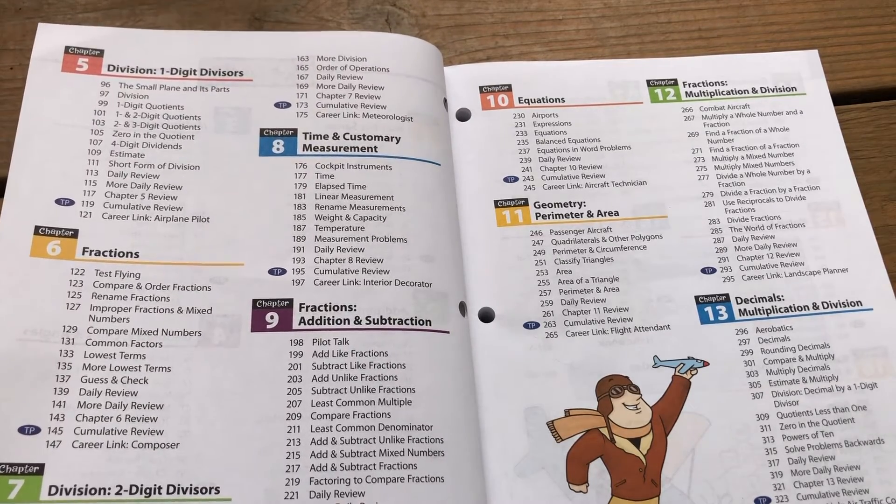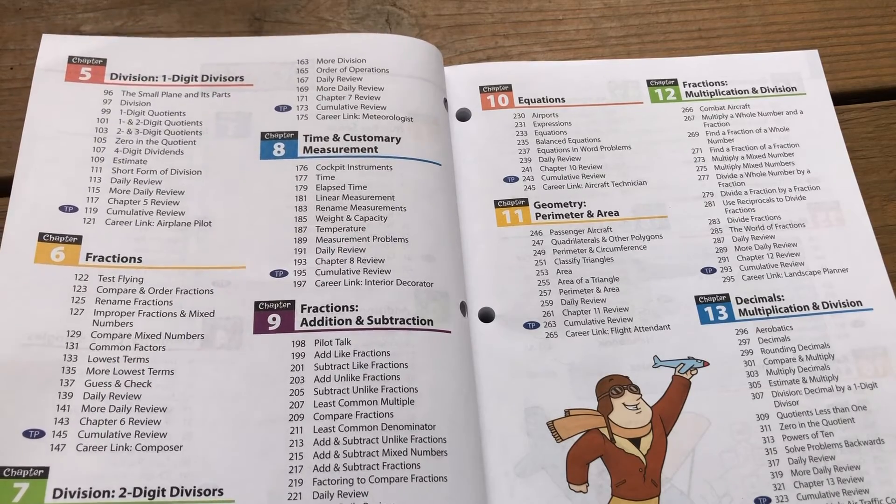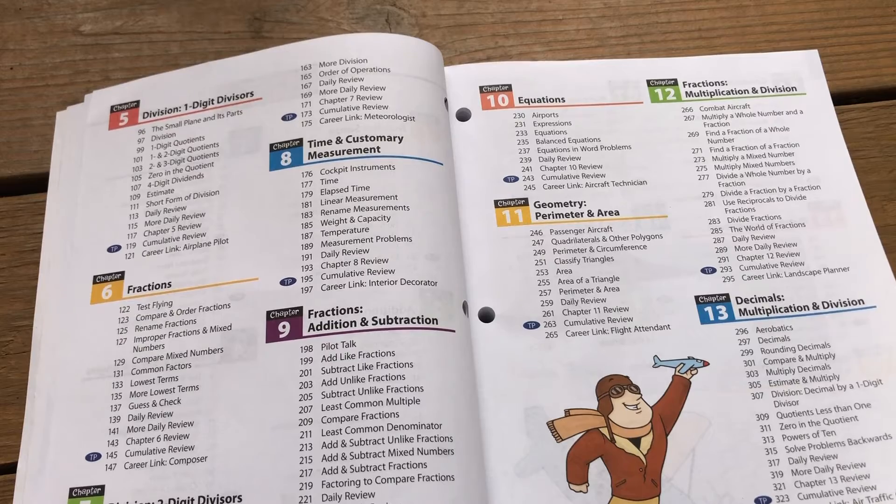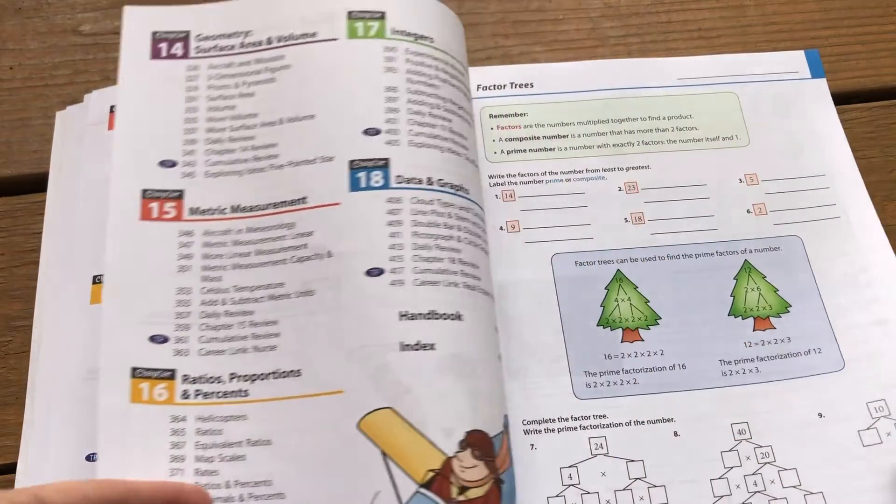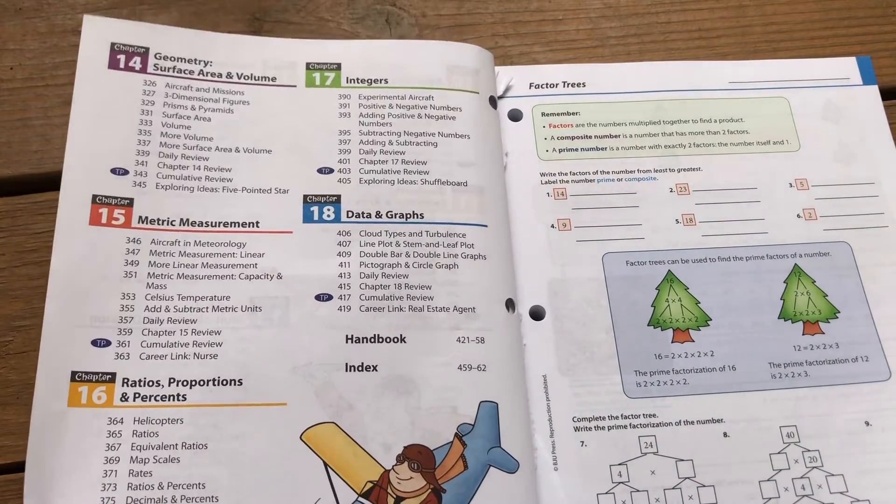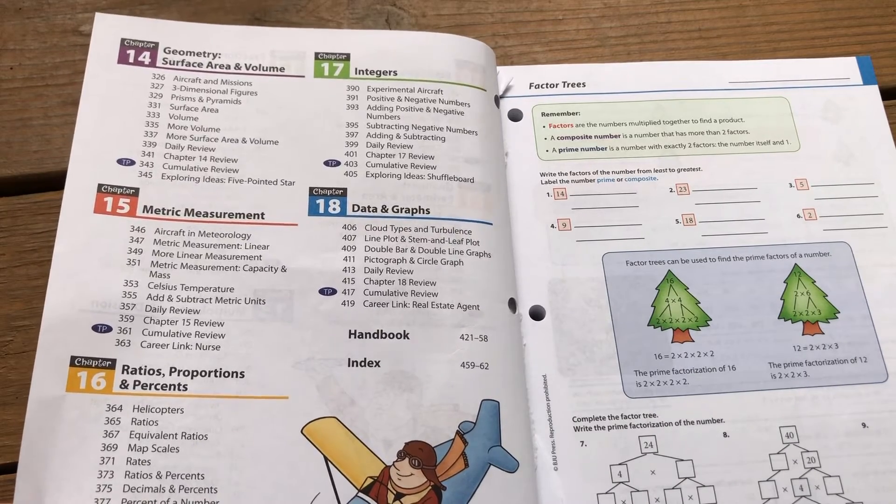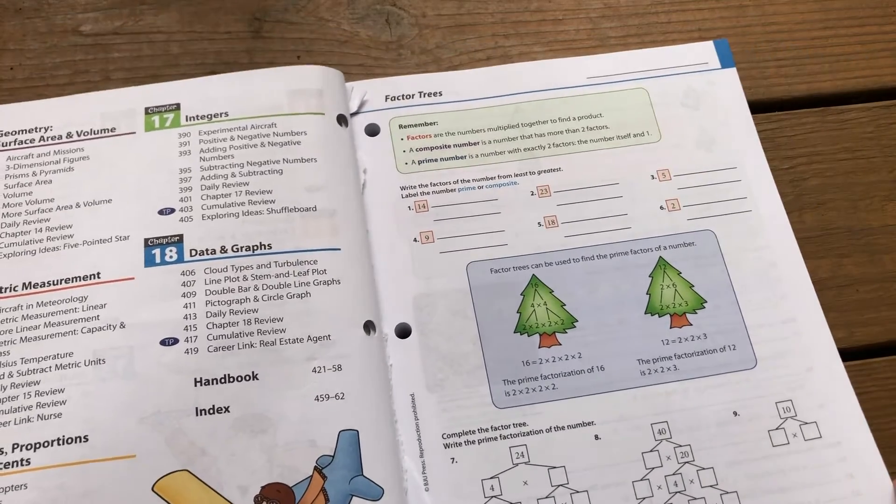But you can see there's a lot of spiral learning going on because fractions are in chapter six but then in chapter nine we do fractions again but now we're adding and subtracting and then it keeps going back to those same topics but on a higher and deeper level. So you can see the spiral approach.